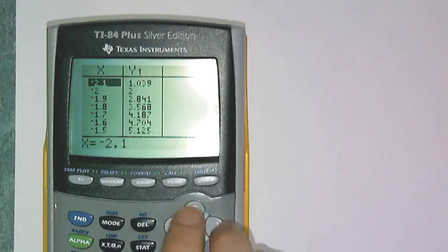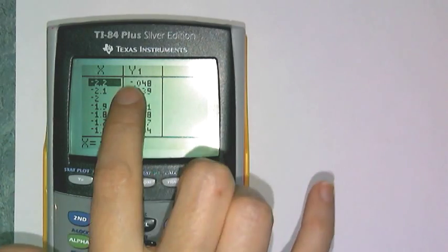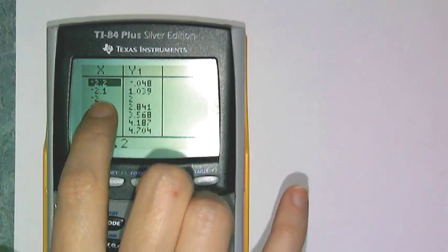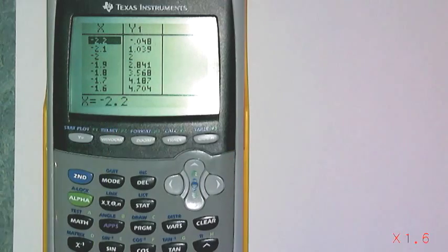If I go back to the table, now my table on the x's counts by a tenth. And I can check to see by the Intermediate Value Theorem, here's a positive, here's a negative. So I know that my zero occurs between negative 2.2 and negative 2.1.